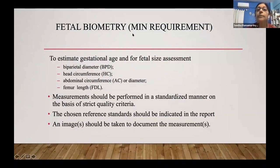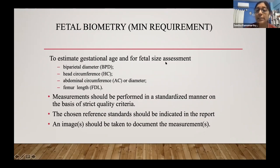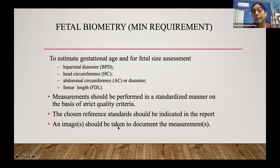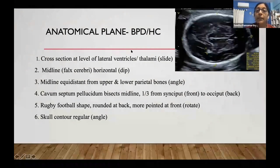For fetal biometry and size assessment, the basic parameters are biparietal diameter, head circumference, abdominal circumference, and femur length. These should be performed in a standardized manner based on strict quality criteria from our professional bodies. You must choose your reference standards and indicate them in the report, and images should be documented for every measurement taken.